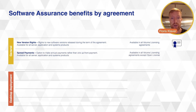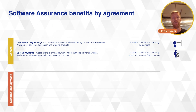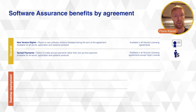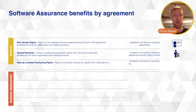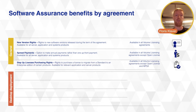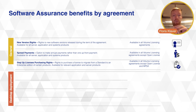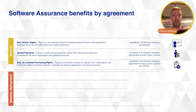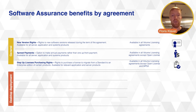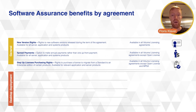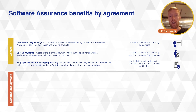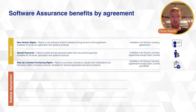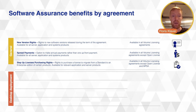Software Assurance also allows for spread payments, so in your Enterprise Agreement you can spread out payments year over year. An additional benefit in certain contracts is the step-up license purchasing right. For example, with SQL Server Standard and SQL Server Enterprise — different editions of the same product — a step-up license lets you move from a lower edition like SQL Server Standard to a higher edition like SQL Server Enterprise by paying only the difference between the two.